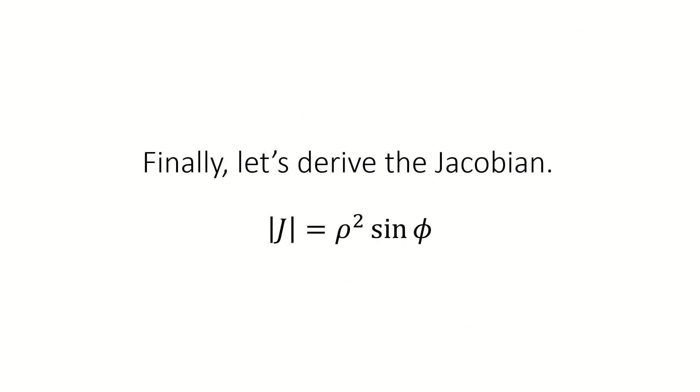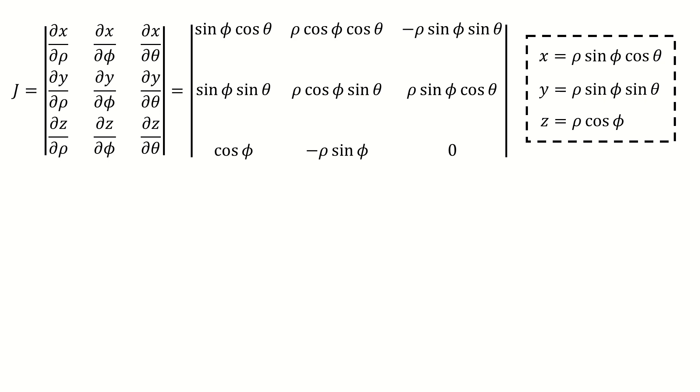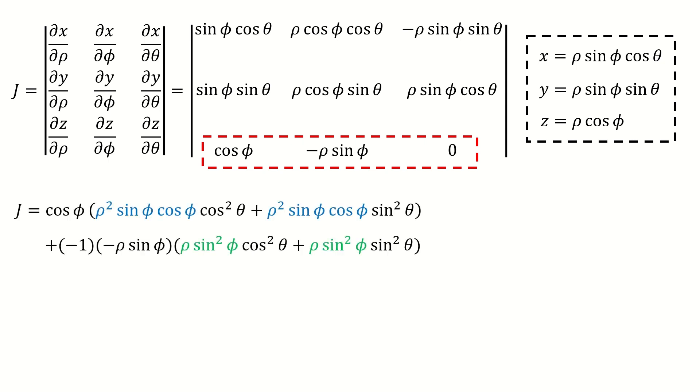Finally, let's derive the Jacobian to complete that missing step. For the spherical coordinate, the Jacobian is defined in this way. Recall the coordinate transformation between the Cartesian and the spherical. We plug them into the definition of Jacobian to calculate those partial derivatives and we got here. Next, we will calculate the determinant of this matrix. Because there is a zero entry at the third row, I will choose the third row to expand this determinant and we got here.